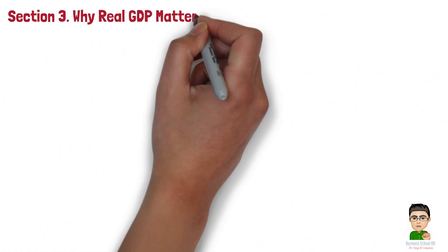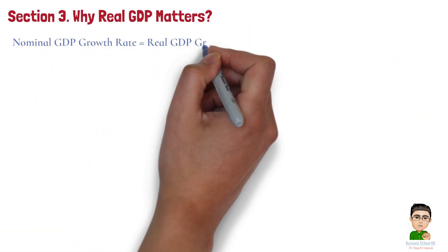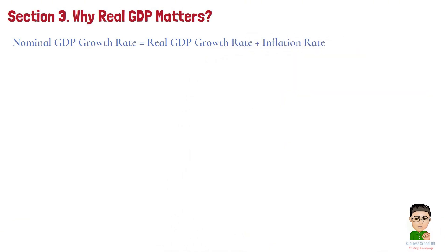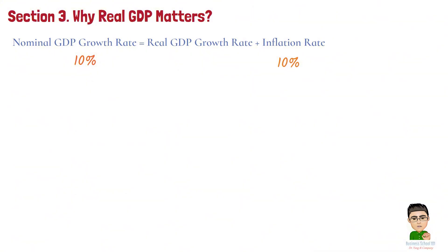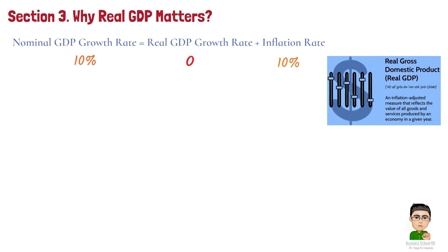Section 3: Why Real GDP Matters. Why does this distinction between nominal and real GDP matter? Imagine this: if nominal GDP grew by 10% in a year, but inflation was also 10%, the real value of what was produced in the economy didn't increase at all — it just means prices went up. This is why real GDP is considered a better measure of true economic growth, because it strips out the effects of inflation.